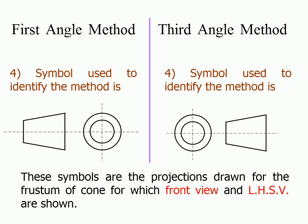These symbols are the projection drawn for the frustum of cone for which front view and left hand side view are shown.